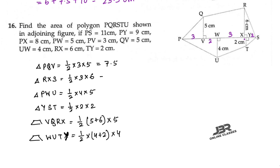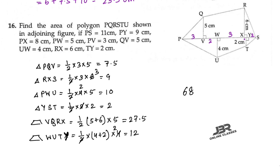So the total area = 7.5 + 9 + 10 + 2 + 27.5 + 12 = 68. Your final answer is 68 centimeter square.